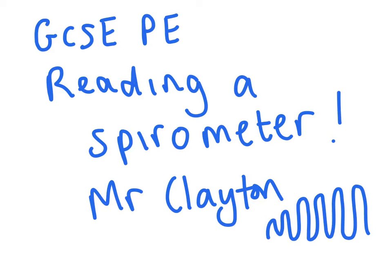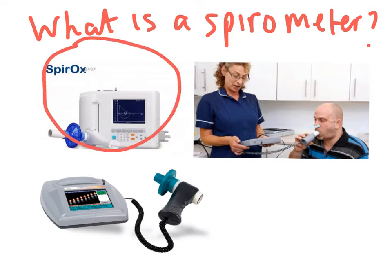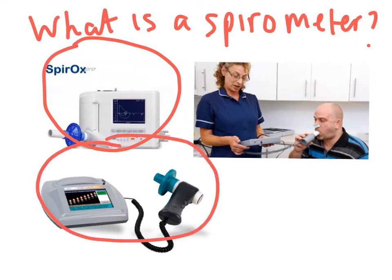This video follows on from the respiratory system and looks at something called a spirometer. As you can see from the three images here, we've got quite an advanced one which you may see at a hospital, a slightly more advanced one, and a gentleman sat down using one. A spirometer is a machine in common use, particularly in hospitals, which is used to assess how well your lungs work by measuring how much air you inhale and how much you exhale.